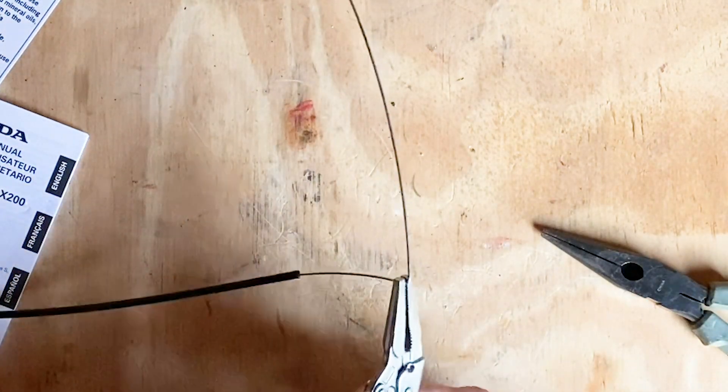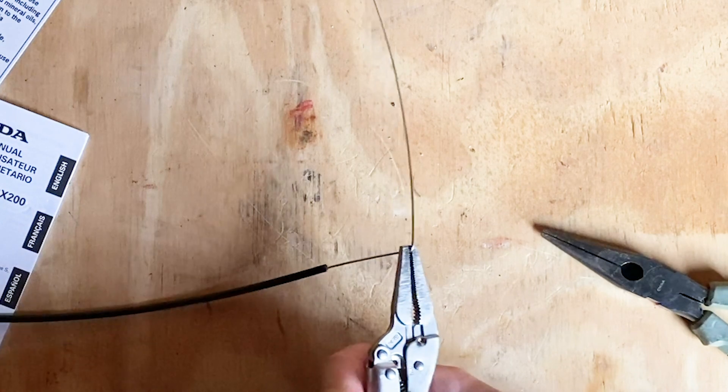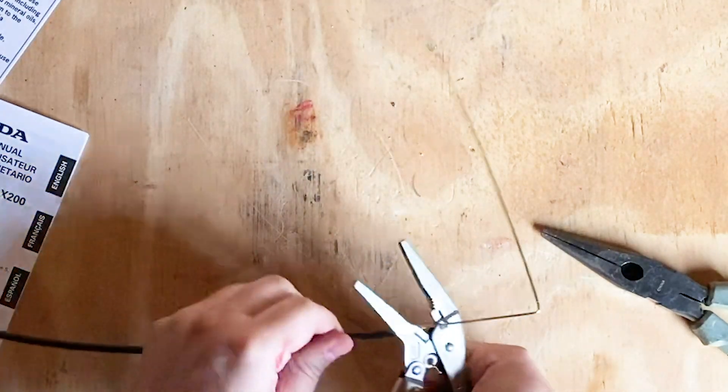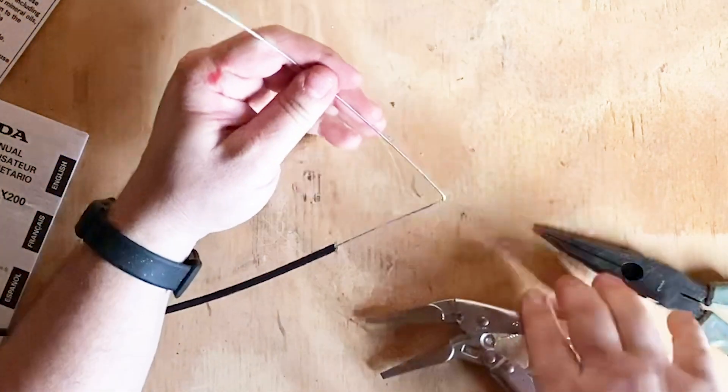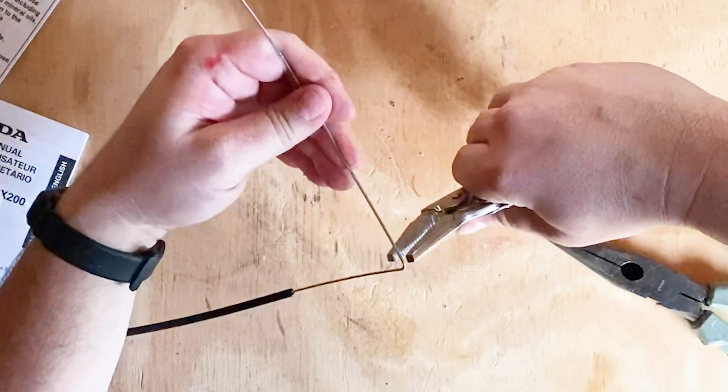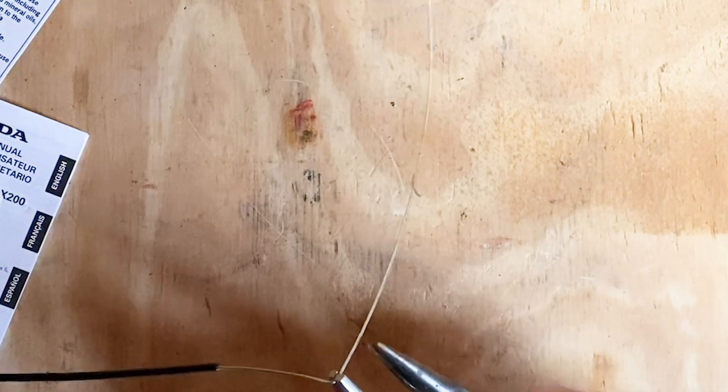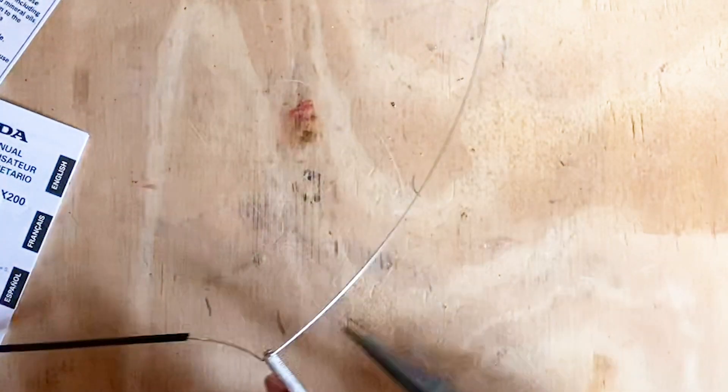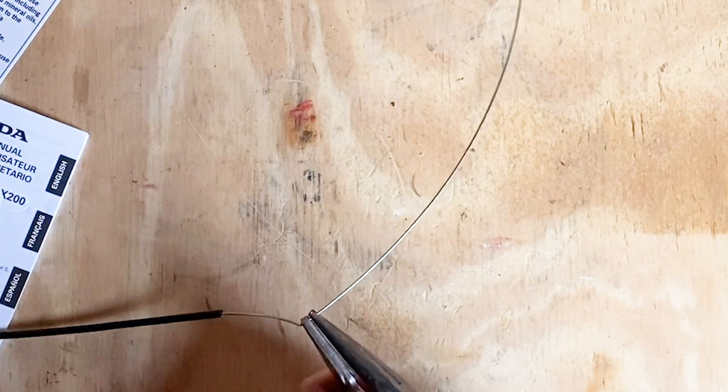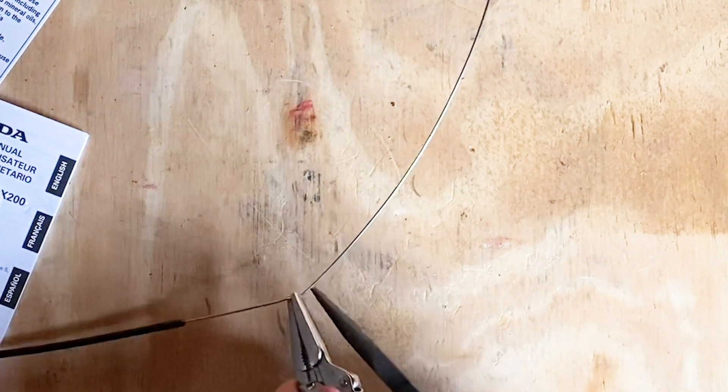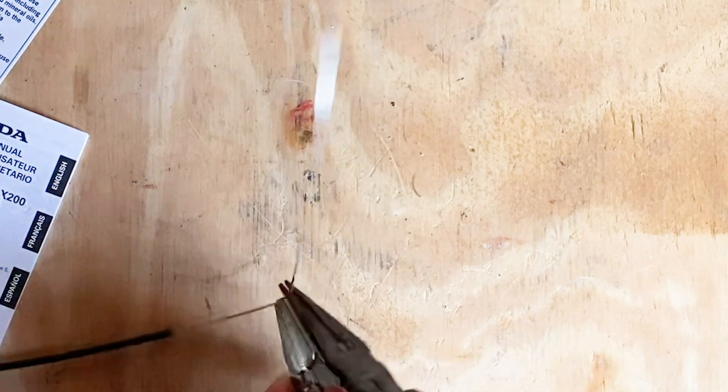Then you're going to come back and do your vice grip. So you'll have it bend like this. Come back with your vice grip and pinch right here at the bend on the other side and go ahead and bend in the opposite direction, up like that.